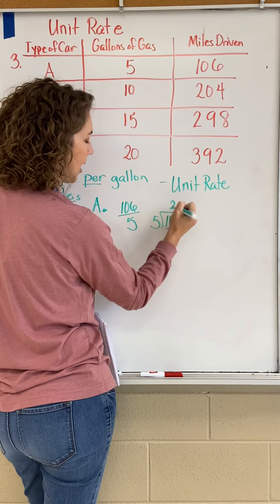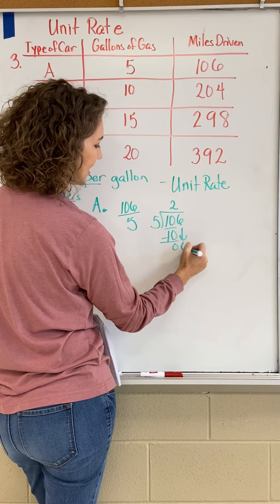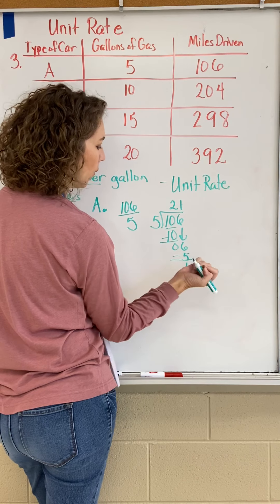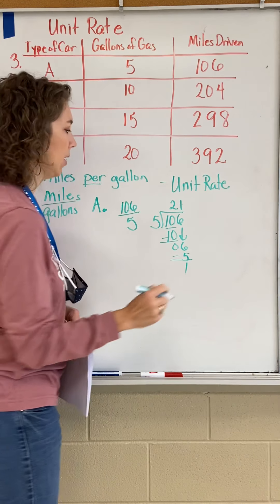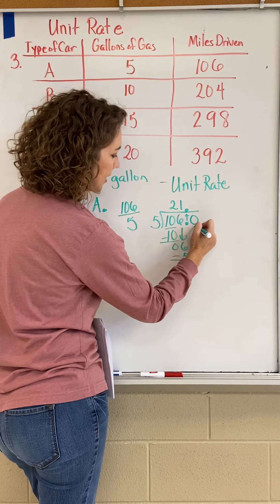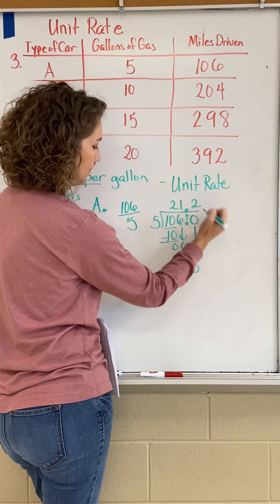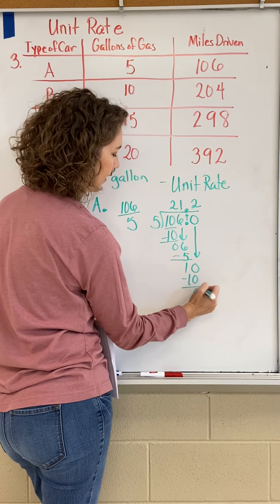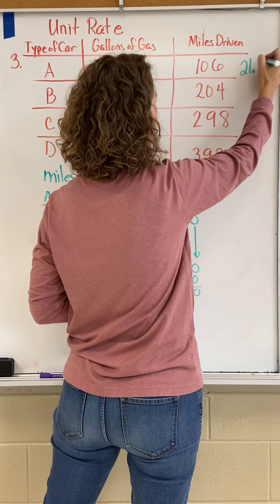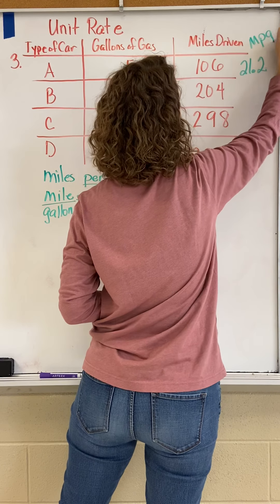5 will go into 10 two times. Two times 5 is 10, subtract, we get zero. Bring down the 6. 5 will go into 6 one time. One times 5 is 5. We don't leave remainders in middle school, so we put a decimal and a zero, push the decimal up, slide the zero down. 5 will go into 10 two times. Five times two is 10, we get zero. So car A gets 21.2 miles per gallon.